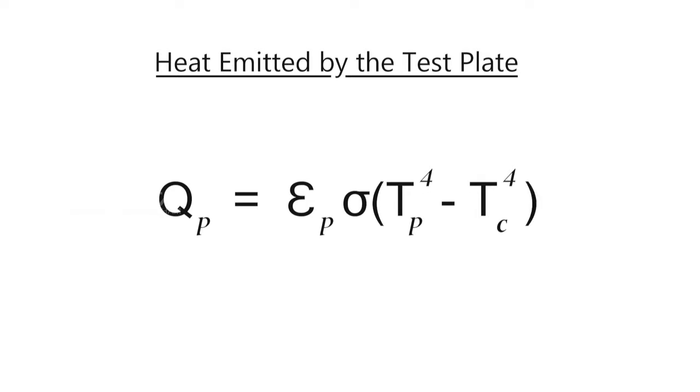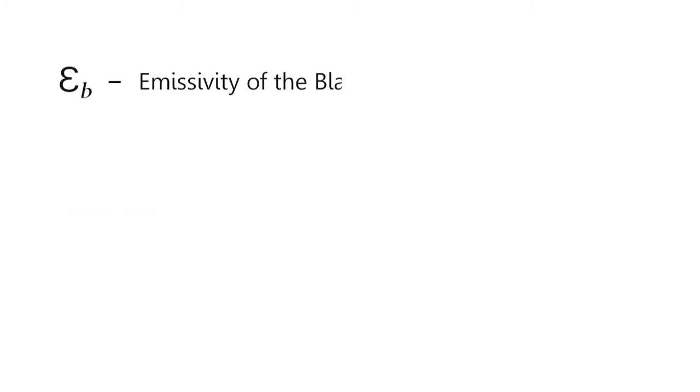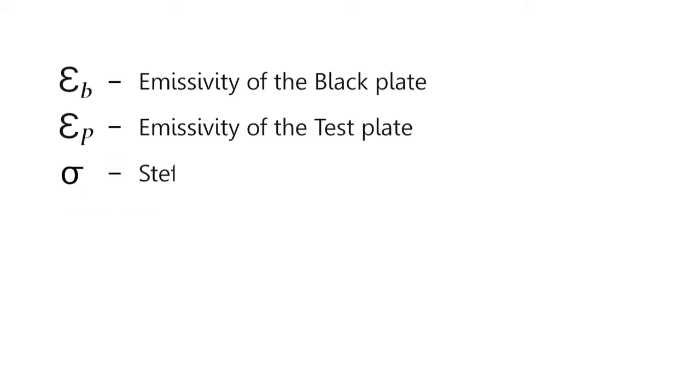Where εb is the emissivity of the black plate, εp is the emissivity of the test plate, σ is Stefan-Boltzmann constant that is 5.67 × 10⁻⁸ W·m⁻²·K⁻⁴.